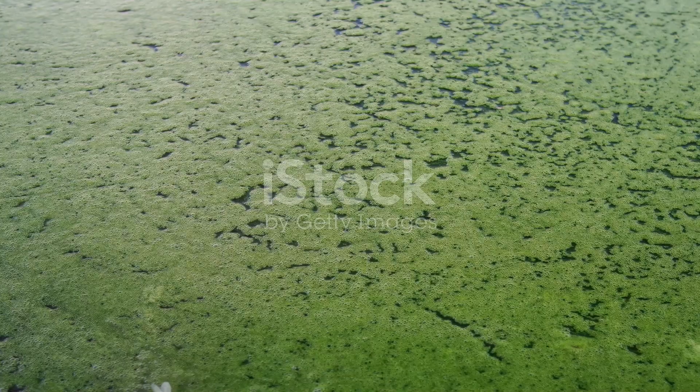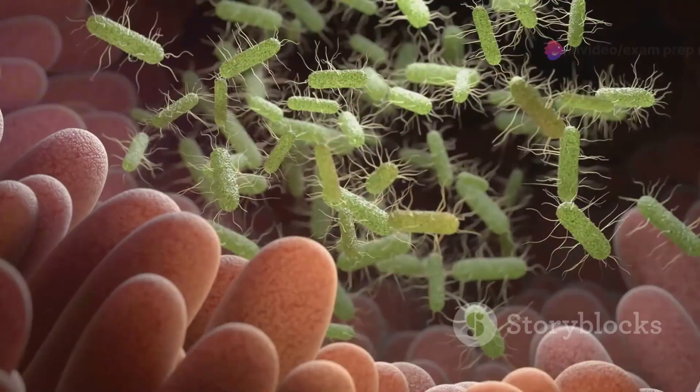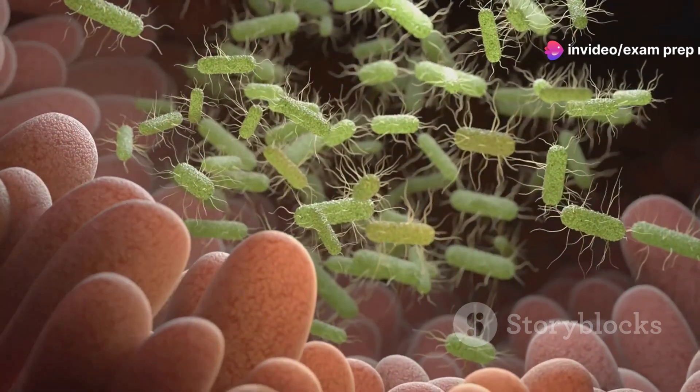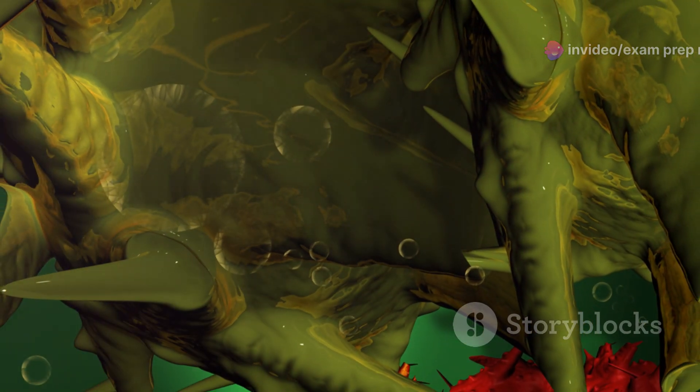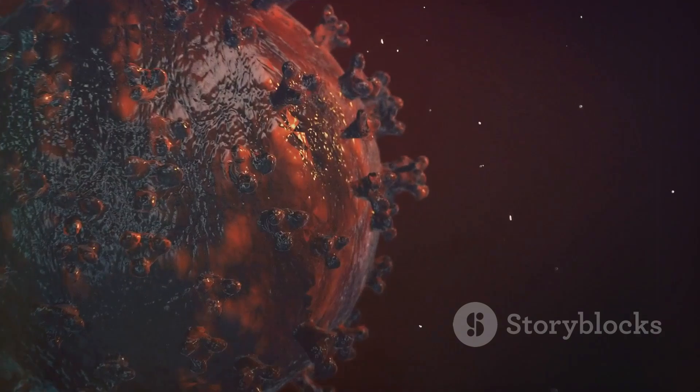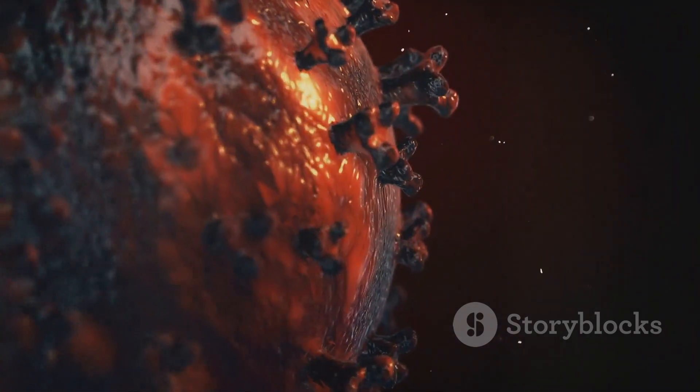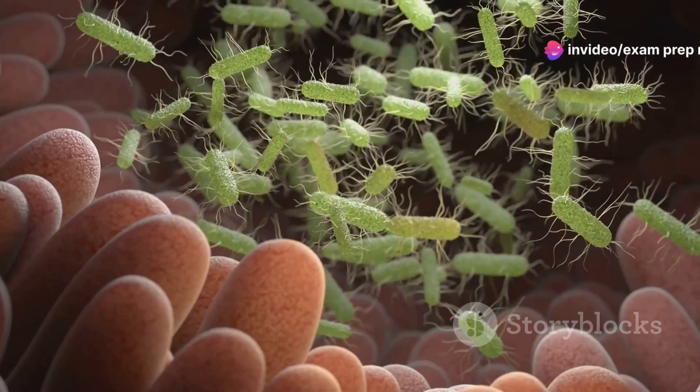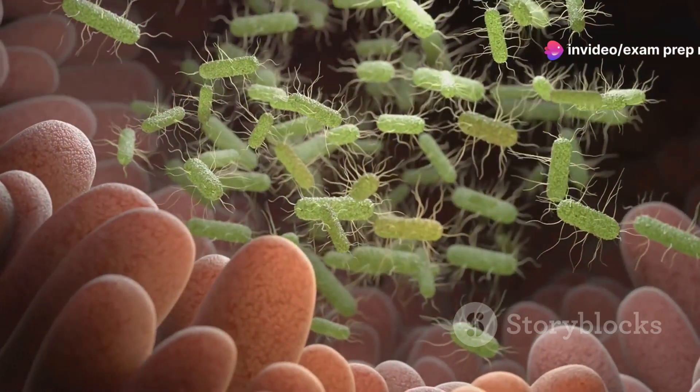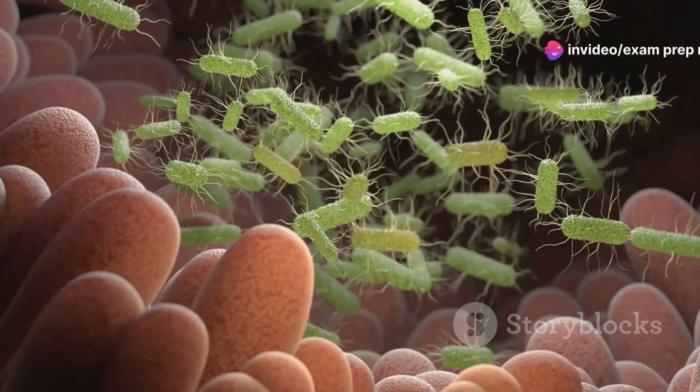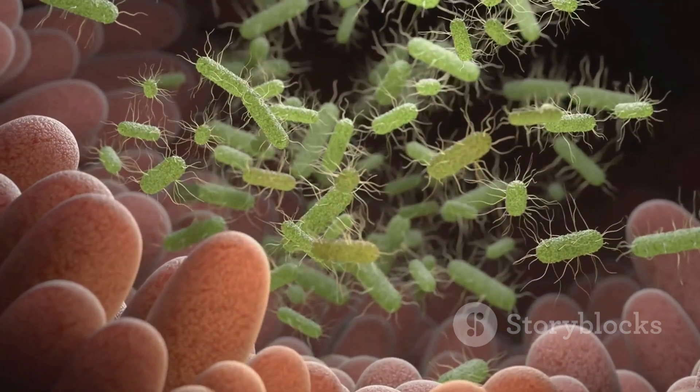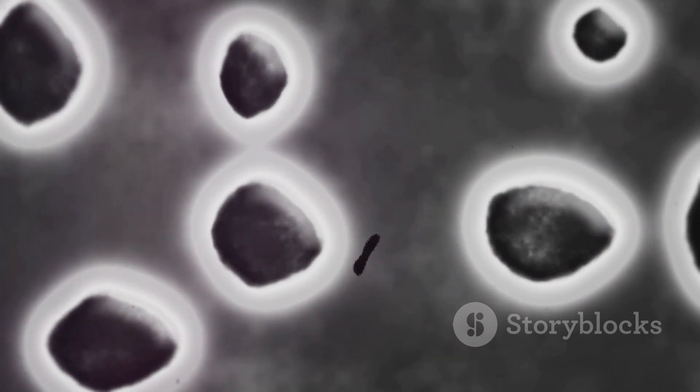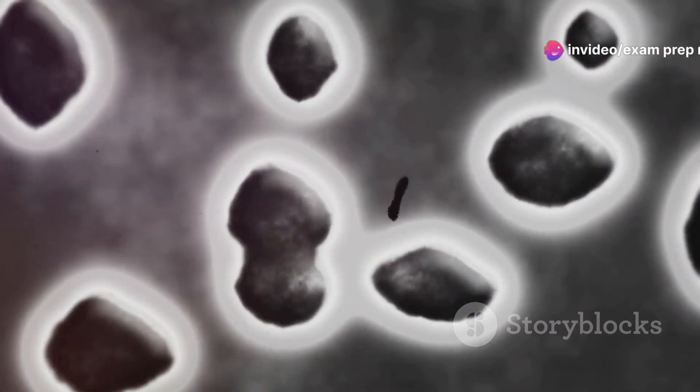Section 6, cyanobacteria, the original photosynthesizers. Prepare to be amazed by cyanobacteria, the original masters of photosynthesis. These remarkable bacteria, also known as blue-green algae, played a crucial role in shaping the Earth's atmosphere and paving the way for life as we know it. Cyanobacteria are like tiny green factories, using sunlight, carbon dioxide, and water to produce their own food through photosynthesis. This process releases oxygen as a byproduct, gradually enriching the Earth's early atmosphere with this life-giving gas.